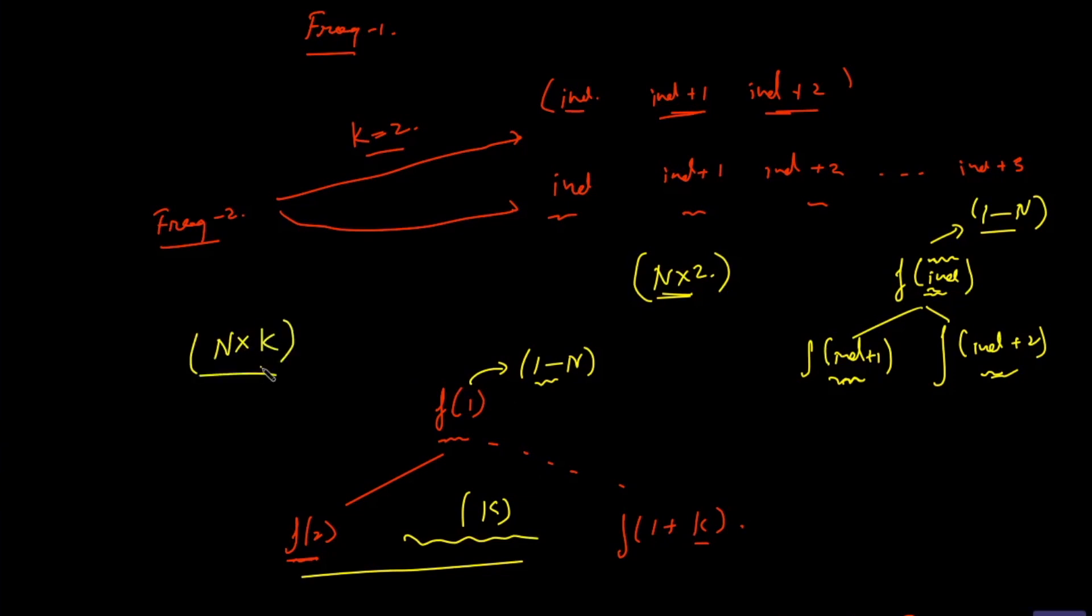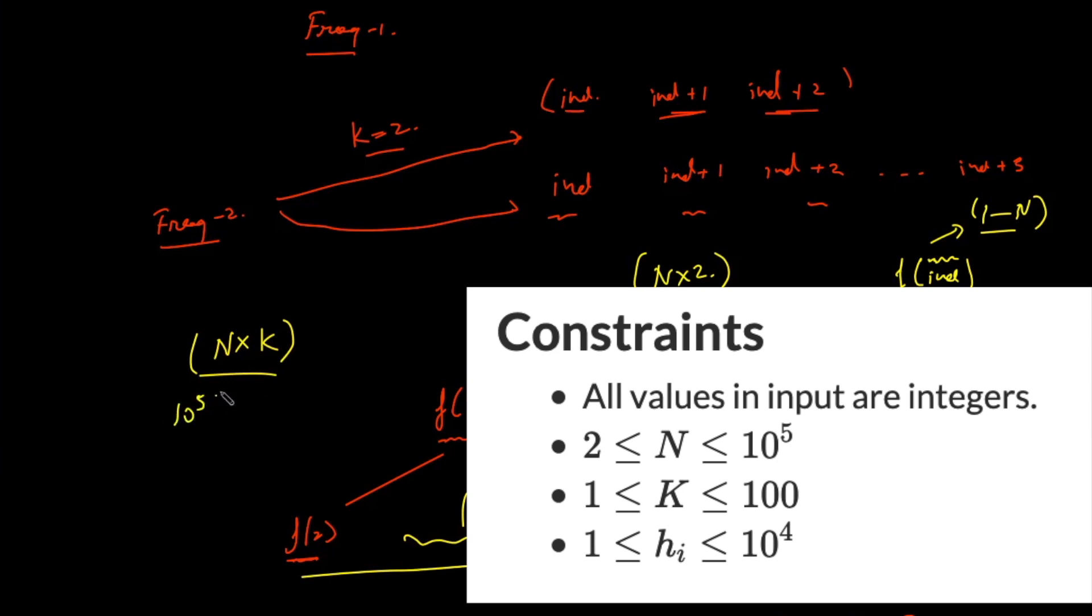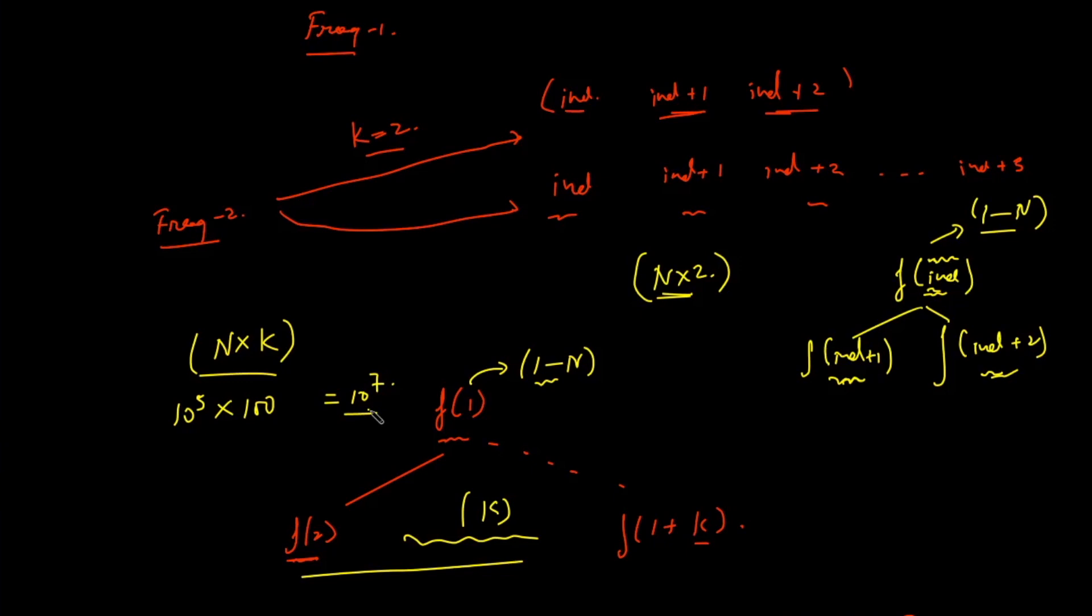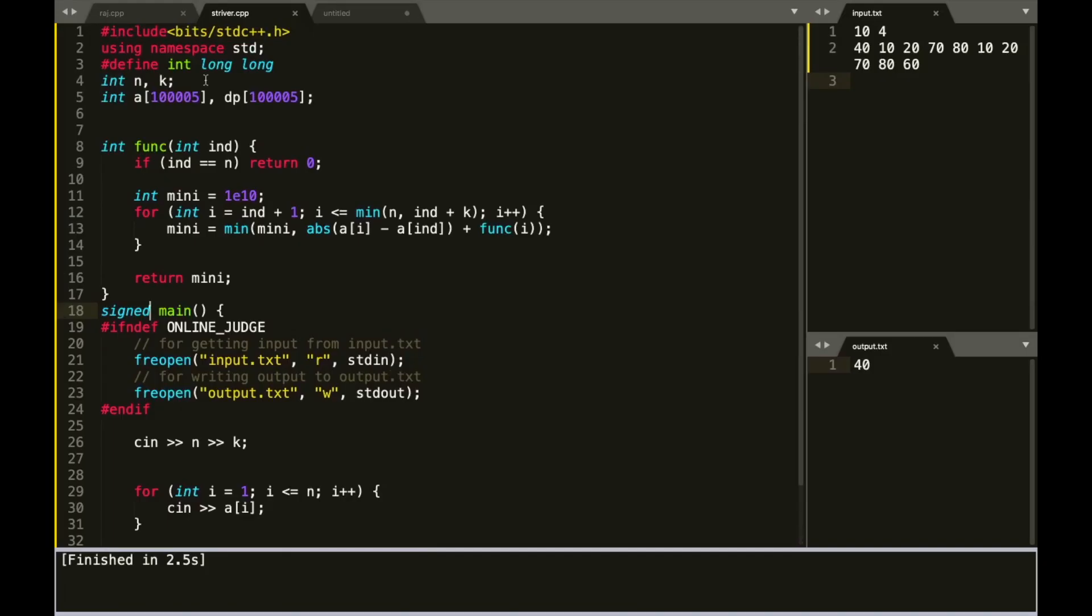And if we check out the constraint, the constraint has 10 to the power 5 as n and k as 100. So that gives you around 10 to the power 7, which fits the time limit. So let's quickly check out how the code looks like.